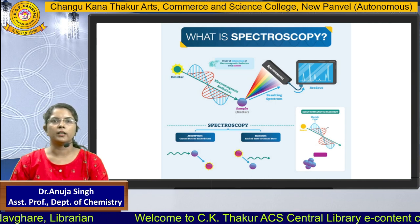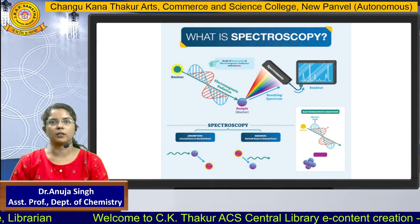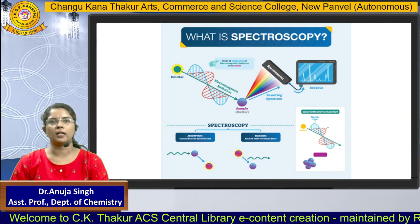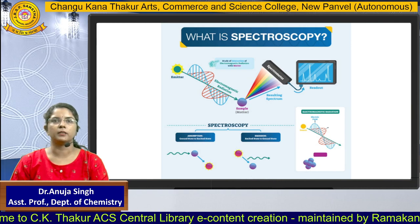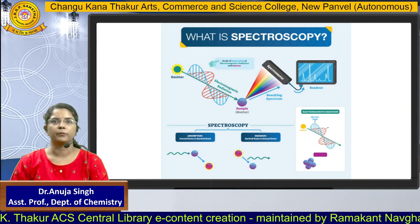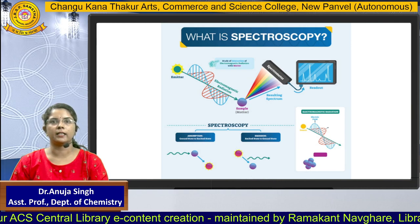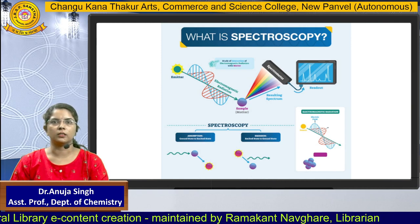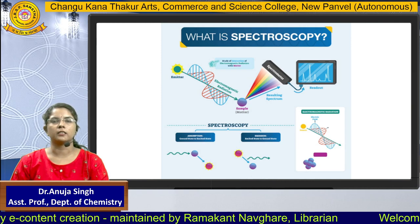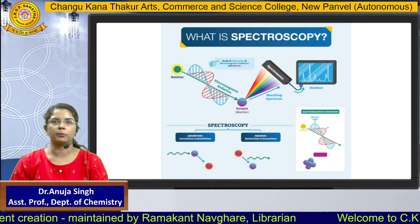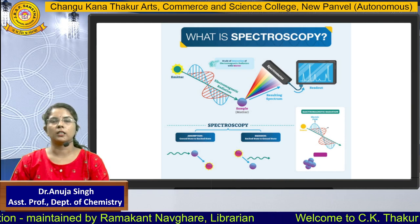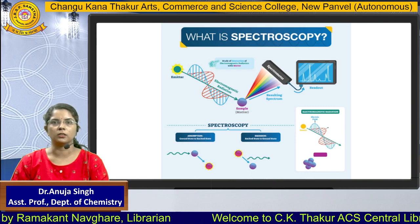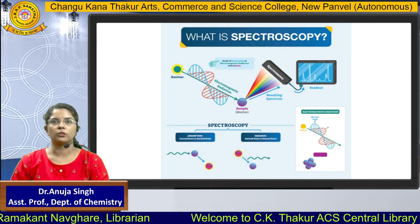When light travels and strikes a molecule, the molecule absorbs some light and transmits the rest. We can detect and study this through a detector to determine different properties of a molecule. There are two important processes: first is absorption, second is emission.